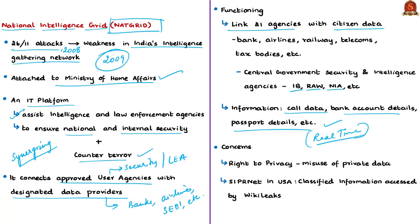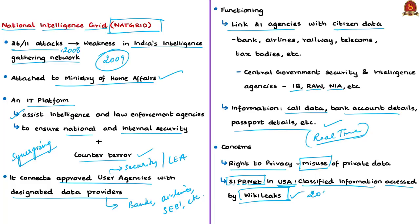There are some concerns associated with NATGRID. Certain sections of civil society have raised concerns over the right to privacy regarding the information that will be provided. Even though only authorized agencies will get real-time information, there are chances that private data might be misused, and the government must ensure this data is used only for countering terror. This concern is not baseless — the same happened with a similar network of the USA called the Secret Internet Protocol Router Network (SIPRNet). The classified information available in SIPRNet was accessed and released by WikiLeaks in 2010, representing a security breach. The same can happen with NATGRID, so Indian authorities should put extra care to ensure the safety of the database.